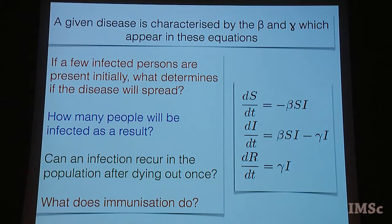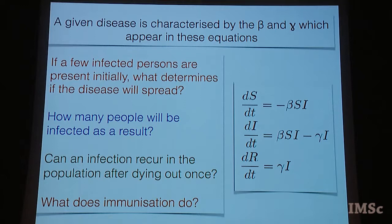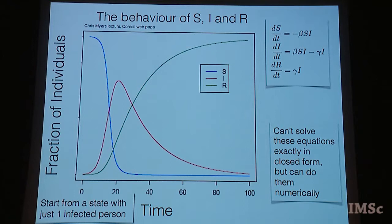The questions we might want to ask are: If a few infected persons are present initially, what determines whether the disease will spread or not? If it spreads, what fraction of the population will be infected? Can an infection come back to the population after dying out? And finally, why do we vaccinate — what is the logic behind it? Should we vaccinate everybody in the population, or can we get by with vaccinating a smaller fraction? These are the questions we would like the simple model to answer.